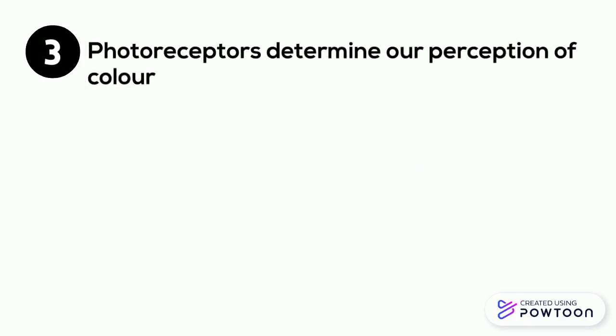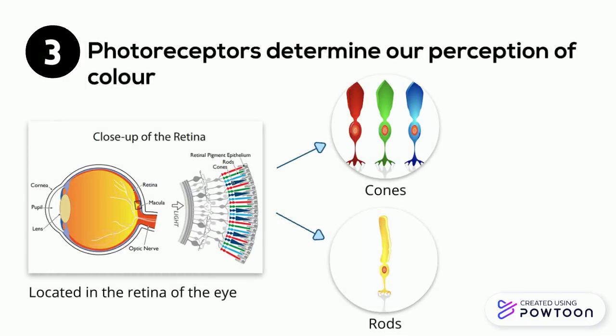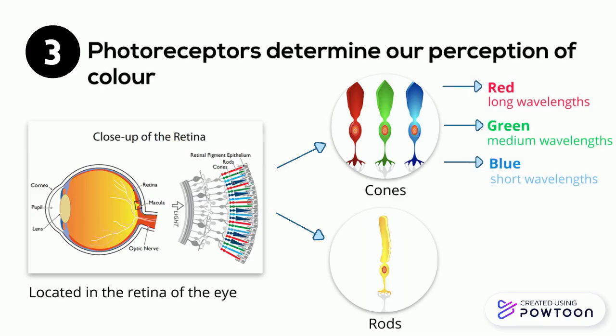The retina in the human eye contains photoreceptors that determine our perception of color. Cones and rods are the two types of photoreceptors. Cones determine color vision and rods assist with low light vision. There are three types of cones that respond to different wavelengths of light — red, green, and blue — each stimulated by different wavelengths.